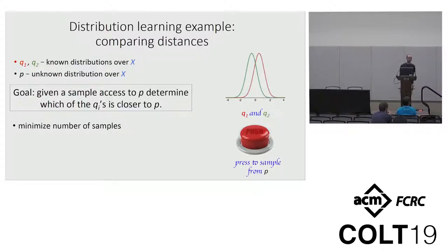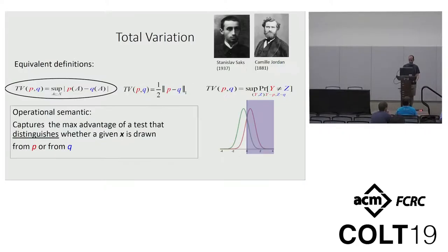So distribution learning provides an abstract framework in which we can study this question. Let's be more formal. Imagine we have Q1 and Q2, which are both two known distributions over some domain X, and we have sample access to some unknown distribution over X. The goal is to sample as few points from the unknown distribution and to determine which of the QIs is closer to P.